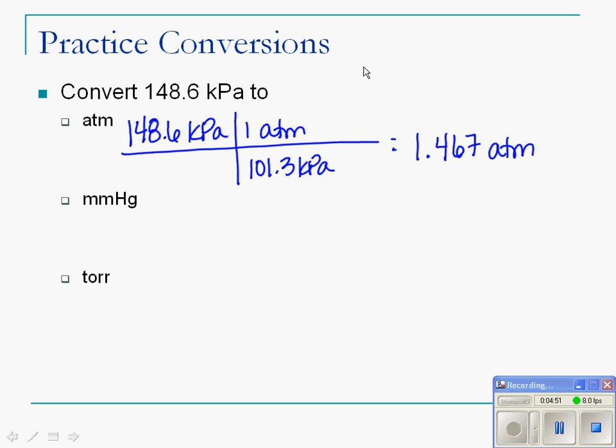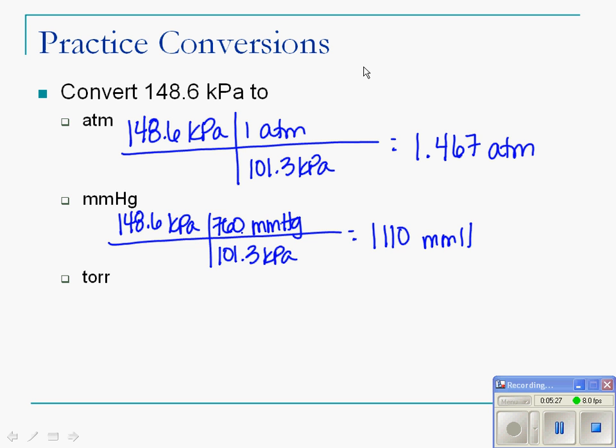Coming down to millimeters of mercury, 148.6 kPa, 101.3 kPa. And if you went back to that slide from before, you would see that 101.3 kilopascals is equal to 760 millimeters of mercury. And so we take 148.6, multiply that by 760, and then divide it by 101.3. And we are allowed three sig figs, so 1,110 millimeters of mercury.